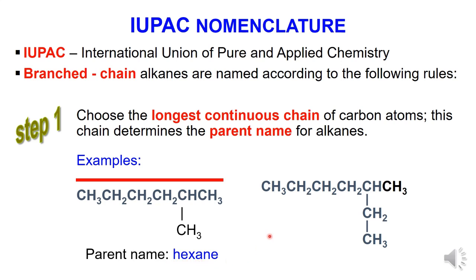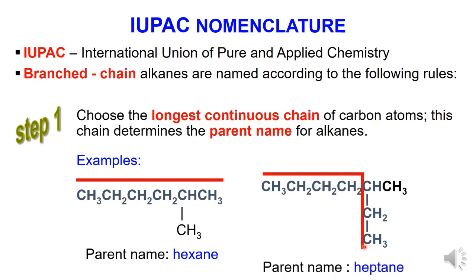Example for the second structure: the longest continuous chain of carbon atoms starts from left to down, which consists of 7 carbons. So the parent name is called heptane.